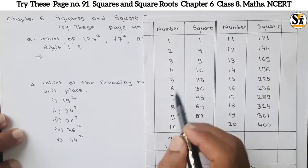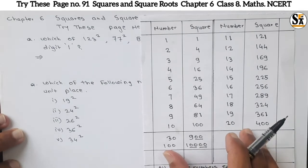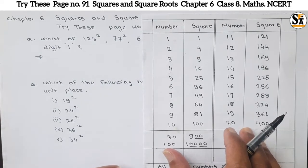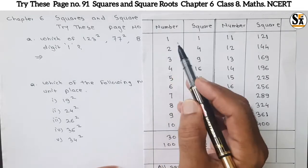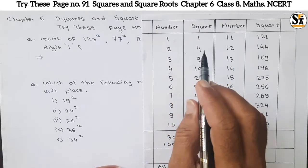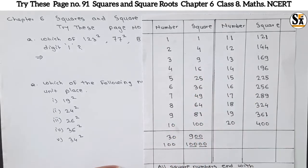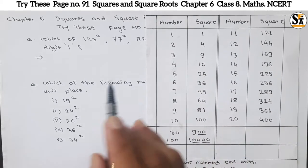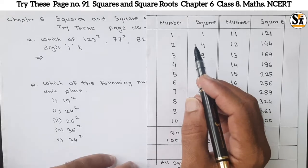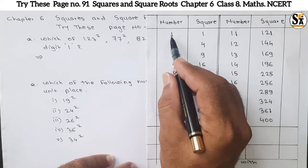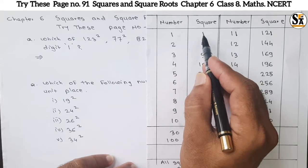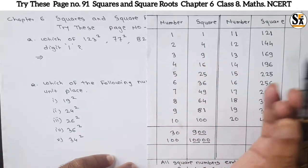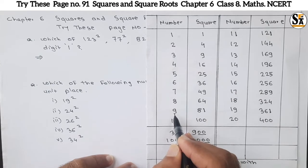Refer to the chart. In the chart, squares of numbers 1 to 20 are given. If we see carefully, we can see there are specific numbers at the unit place of squares — only 0, 1, 4, 5, 6, or 9. These are the only possible unit place digits for a perfect square number.